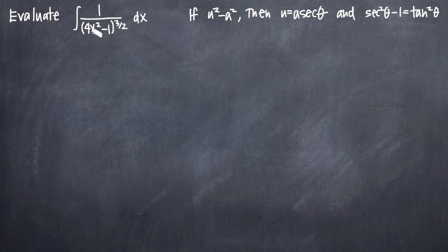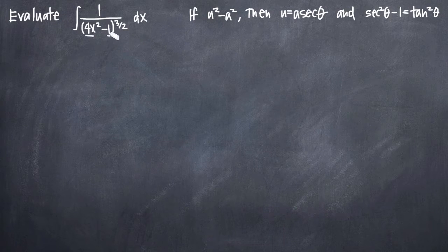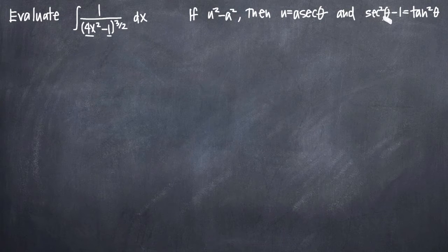If we had 1 - 4x², we'd be using a different substitution. If we had 4x² + 1, or 1 + 4x², that would be yet a different substitution. But in this case, we have the variable term minus the constant term, and both of those are squares, which means we've identified the form u² - a². Given that we have that form in our function, we're going to use the substitution u equals a times secant of theta, and the trigonometric identity secant squared of theta minus 1 equals tangent squared of theta.